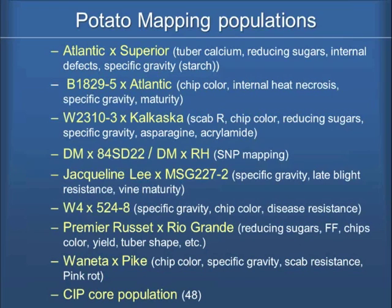I think those 48 CIP clones are going to provide some interesting germplasm comparisons between the U.S. germplasm and the South American germplasm they're working with. What I'm going to focus on today is these two diploid mapping populations. Robin has talked about DM, DM1-3, and it's kind of amazing to step back and recall that Richard was developing his monoploids for the purpose of trying to come up with a breeding system that would reconstruct heterozygous tetraploid.